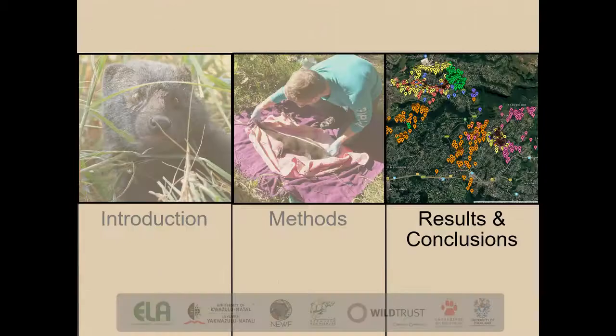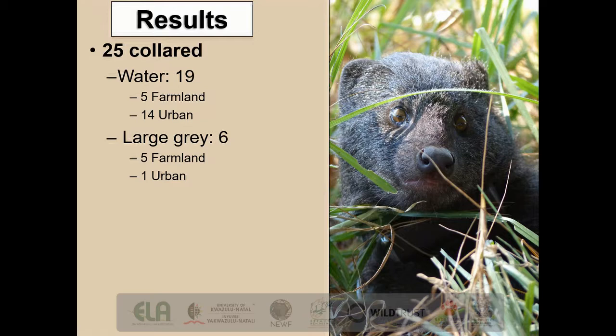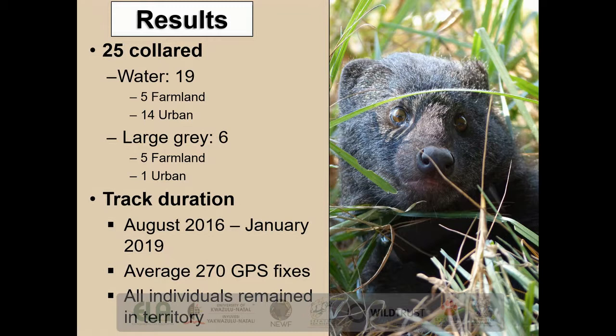Moving on to our results and conclusions. In our study, we managed to successfully collar 25 mongooses, consisting of 19 water mongoose and 6 large grey. In terms of the tracking duration, we started tracking mongooses in August 2016 and finished the study in January 2019. This represents the cumulative tracking period for all individuals and is not individual specific. On average, collared mongooses gave us 270 GPS fixes each, which represents the largest dataset for these species globally. Importantly, all individuals seemed unaffected by the GPS device and remained in the individual territories that they were trapped in.